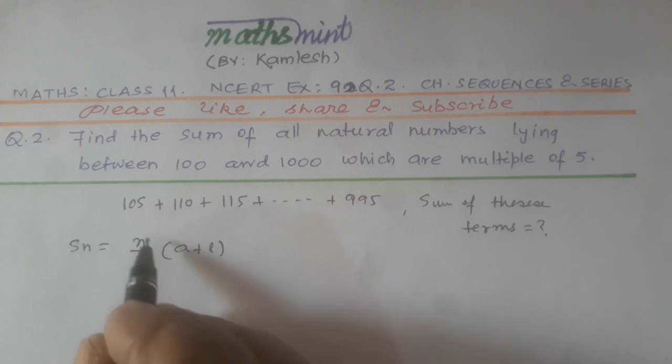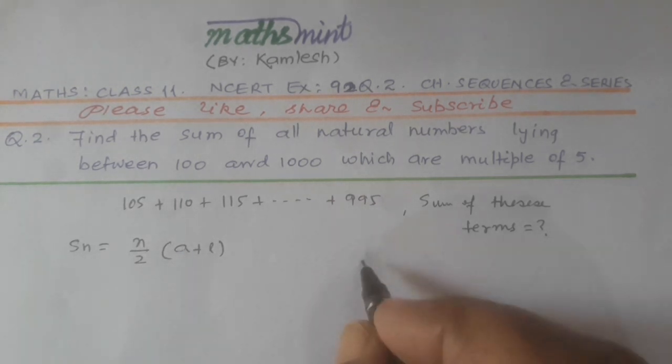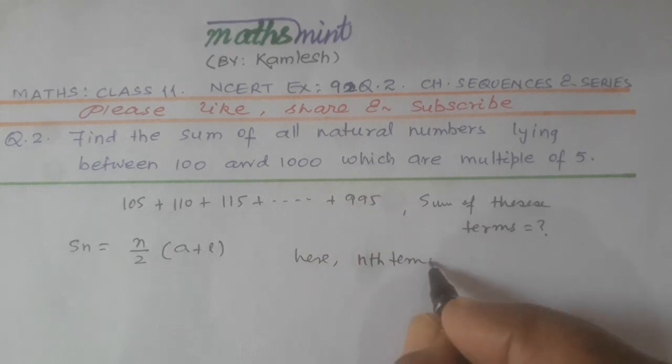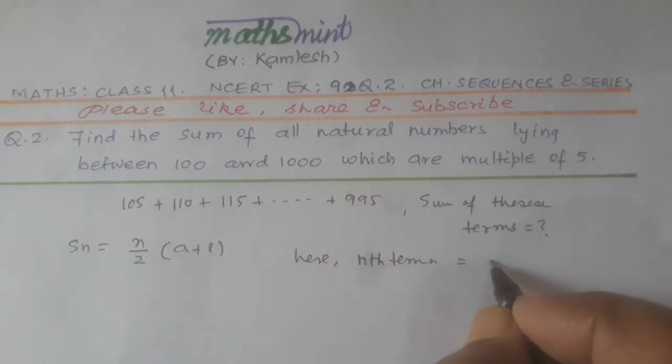To find Sn, first of all we have to find the nth term. Here the nth term is 995.